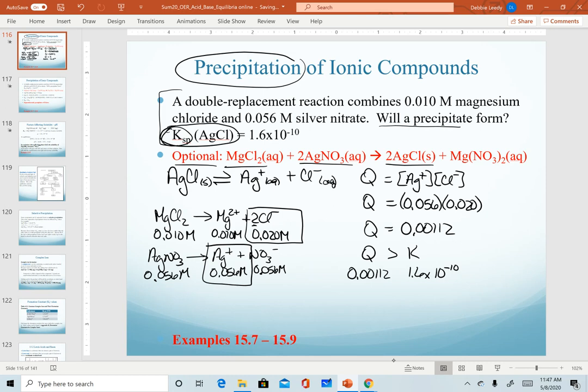Remember, Q bigger than K means that Q needs to decrease. The only way for Q to decrease is for the equilibrium system to shift back left. The equilibrium system we're describing here is the dissociation of silver chloride. So when that shifts back left, that's where our solid is. This is the one scenario that will result in precipitation. So this salt will precipitate.